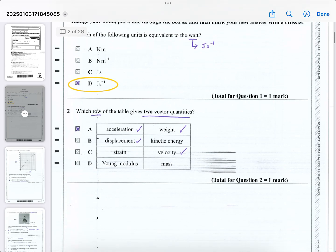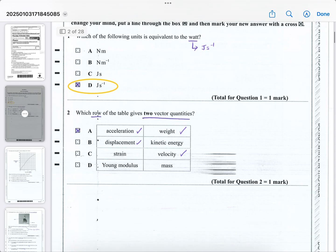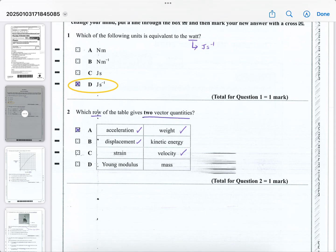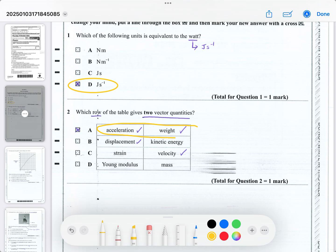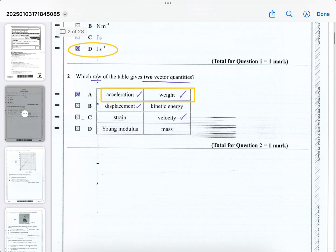Question two, it wants to know which row, which of the table gives two vector quantities, so I've ticked all the vector quantities. You can see the only one with two vector quantities is A. Both acceleration and weight are vector quantities. None of the others have two vector quantities. Another quick question.